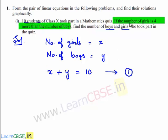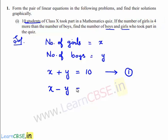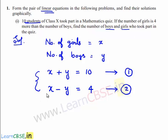According to the second condition, which is the number of girls is 4 more than the number of boys — that means if x is the number of girls and y is the number of boys, then x minus y is nothing but 4. This is because the number of girls is 4 more than the number of boys, so we can say x minus y is equal to 4. This is the second equation. So one part of the question is completed — we have found the pair of linear equations: x plus y equals 10 and x minus y equals 4. Now we have to solve these linear equations graphically to find the values of x and y.